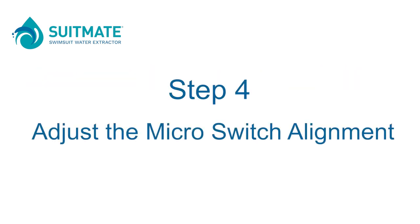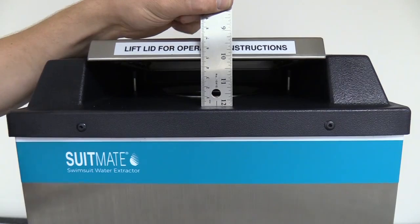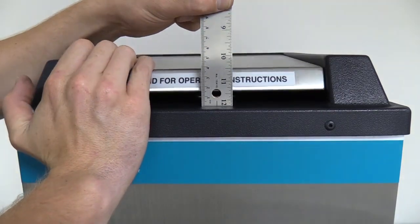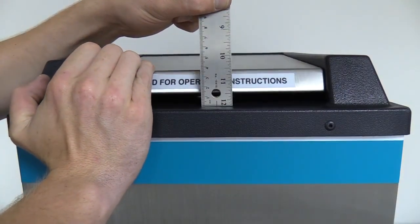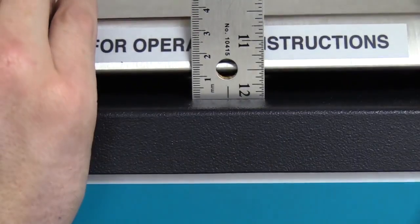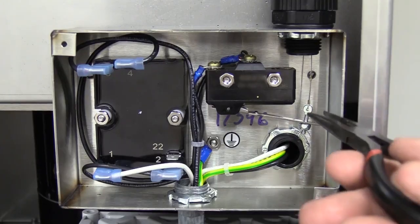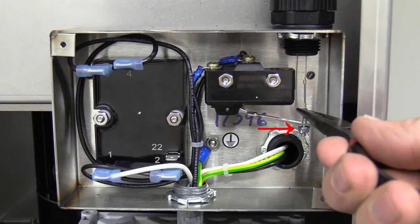Step 4. Adjust the microswitch alignment. First, push the lid down. The microswitch should not click until the lid is approximately 6.4 mm from being totally depressed. Adjust the alignment by tightening or loosening the turnbuckle nut on the bottom of the riser cable.